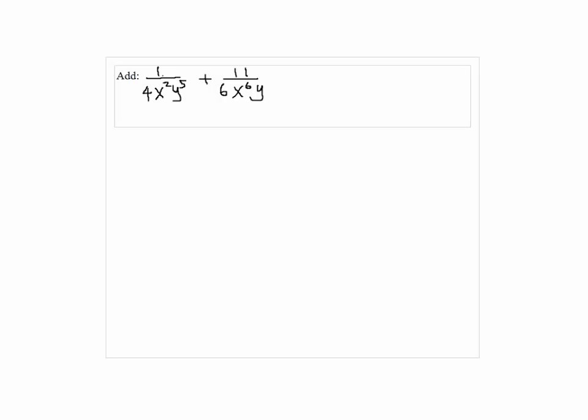Add 1 over 4x squared y to the 5th power plus 11 over 6x to the 6 times y. First, we have to find the lowest common denominator.